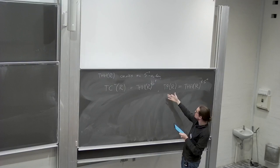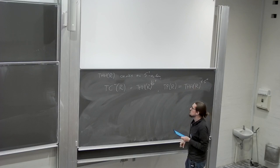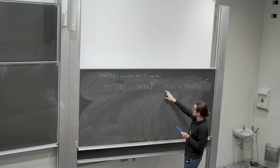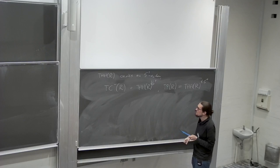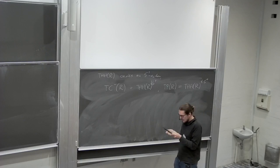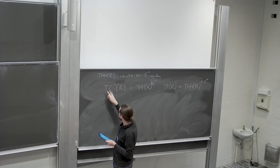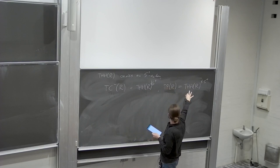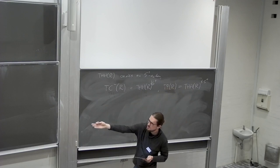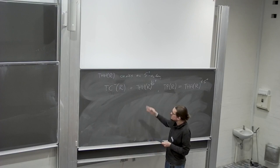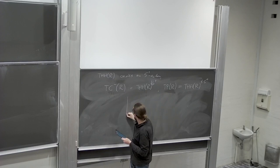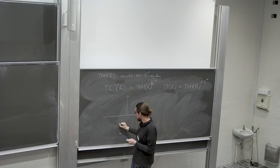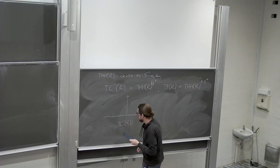Although in this generality it isn't always periodic — this is inspired by the version for usual Hochschild homology, which ends up always being periodic, and that's where the name comes from. Let's look at the homotopy fixed point and Tate spectral sequences. If you know in the Bökstedt case what the homotopy groups of THH look like, you could try to determine the ones of TC⁻ and TP from that.